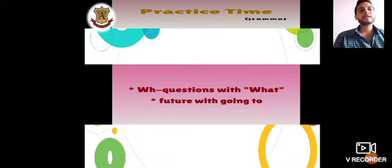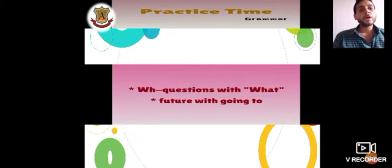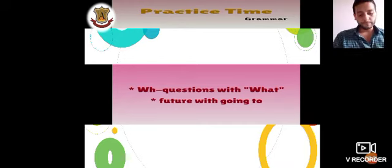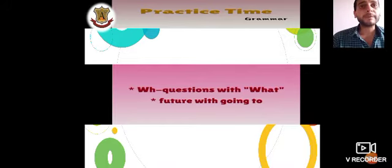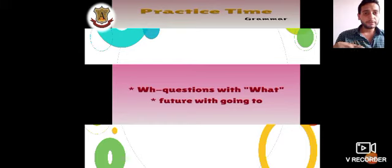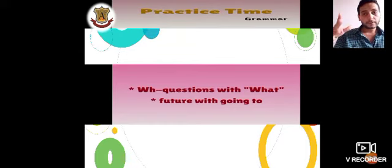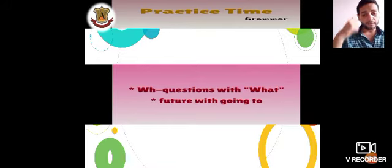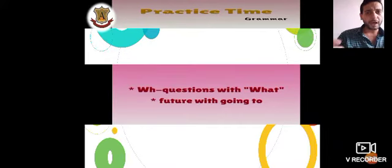Now it's Practice Time. Grammar: WH questions with 'what', future with 'going to'. Let me give you some examples. When I have an intention to do something, I'm in the mood for something, I'm thinking to myself — I'm going to do something.